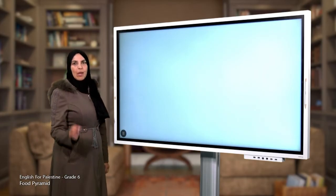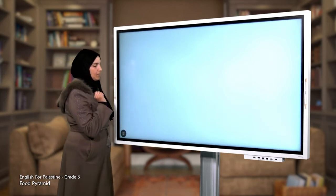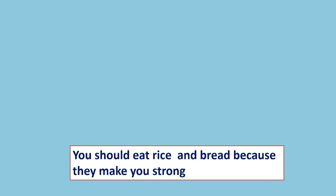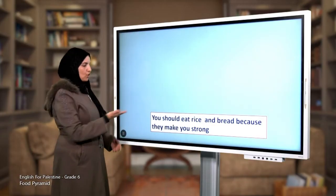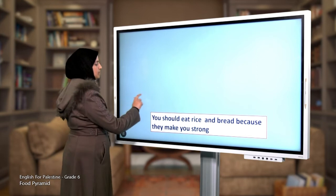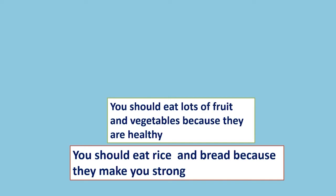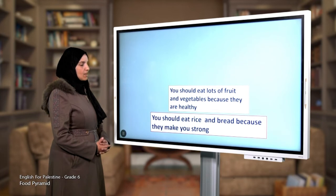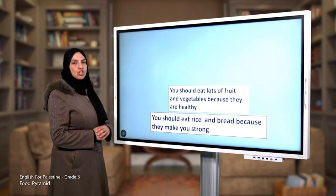Now I am going to give you pieces of advice using 'should' and 'shouldn't.' You should eat rice and bread because they make you strong — that is good advice. You should eat lots of fruit and vegetables because they are healthy. Why should we eat fruit and vegetables? Because they are healthy!